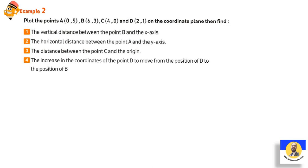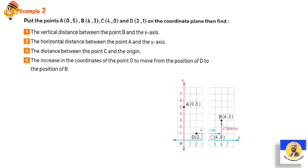Plot the points: A (0, 5), B (6, 3), C (4, 0), D (2, 1), then answer the questions. Point A is at (0, 5) — on the y-axis. Point B is at (6, 3). Point C is at (4, 0) — on the x-axis. Point D is at (2, 1).